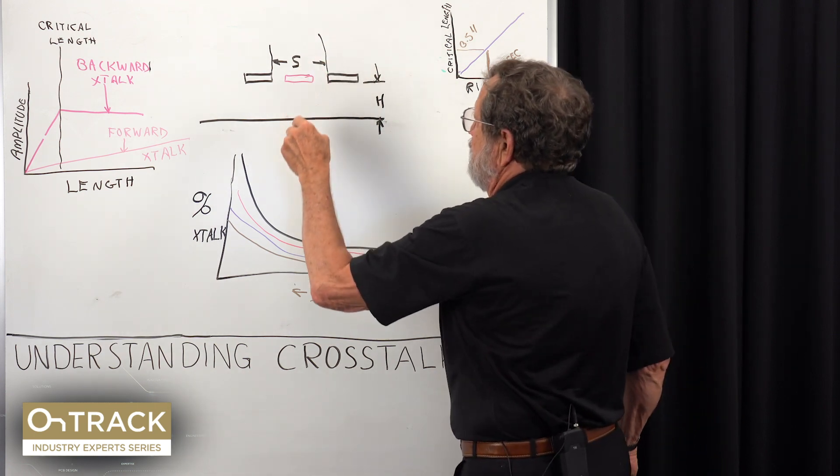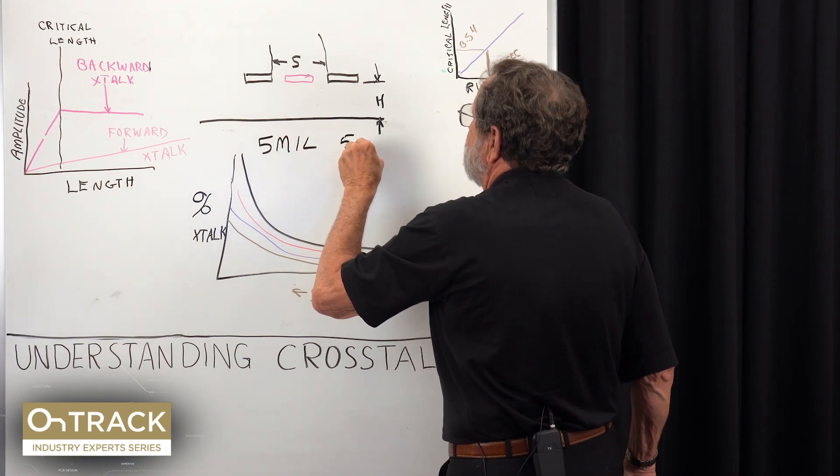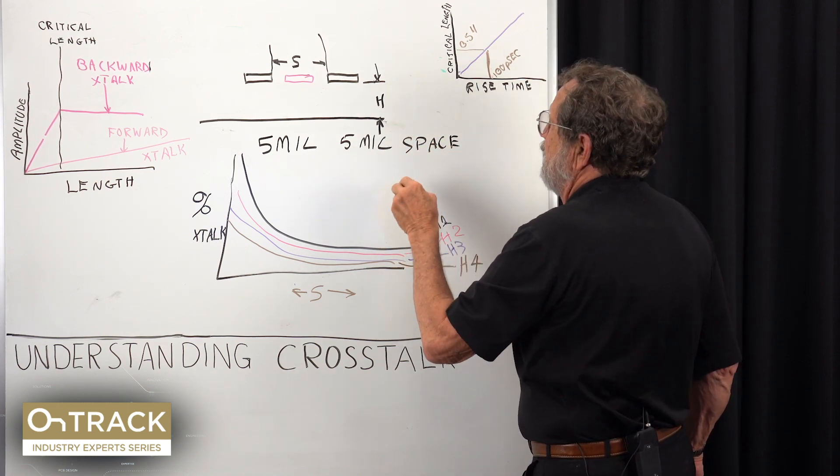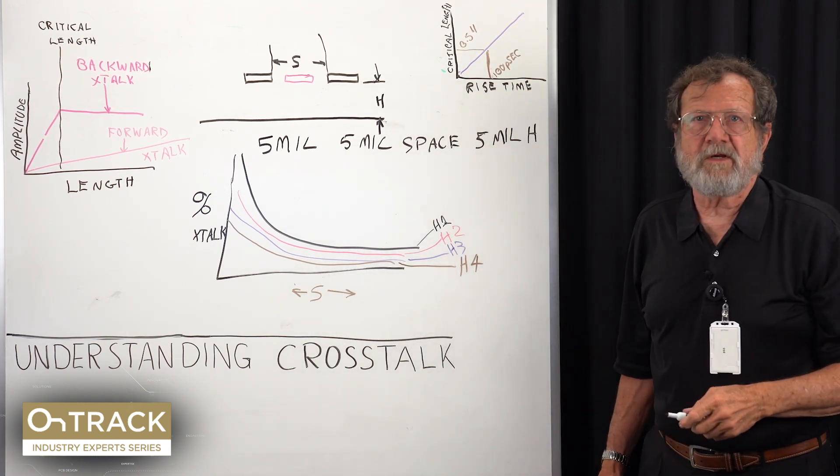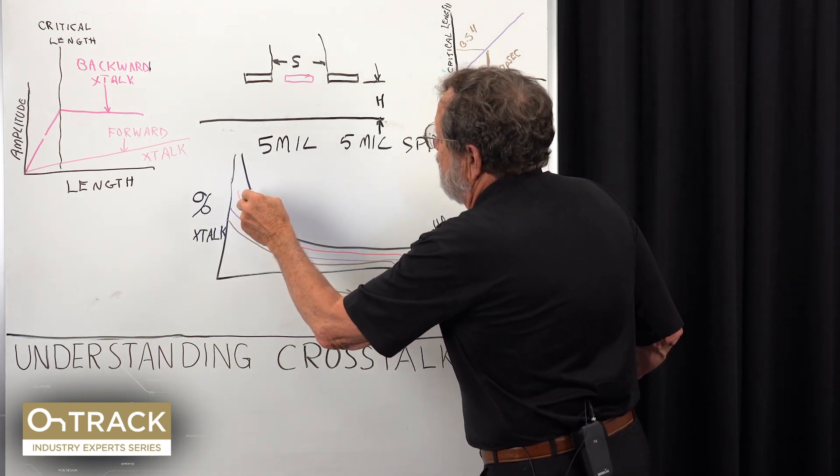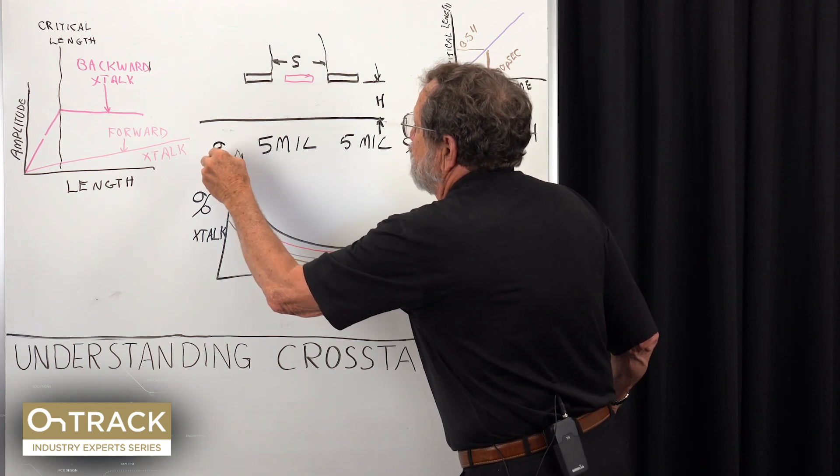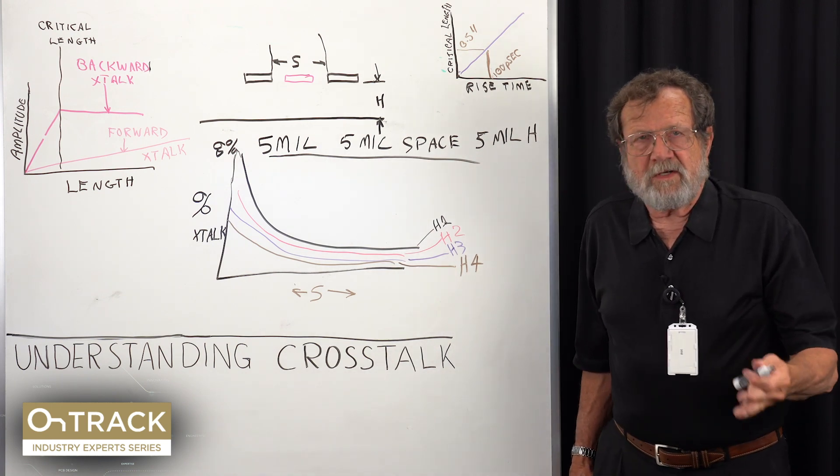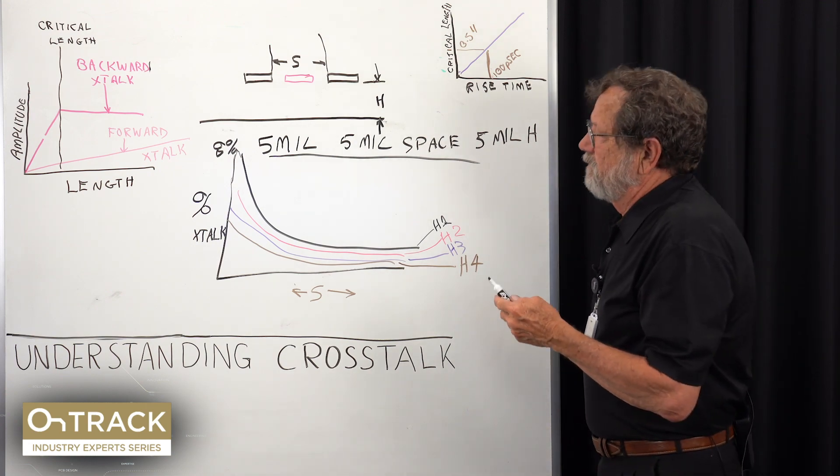The classic routing for most people is 5 mil line, 5 mil space, and 5 mil height. That's very common, and if you do that you'll find—I'm taking this number from memory—about 8% crosstalk for this condition.